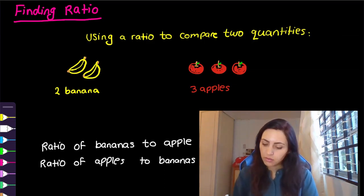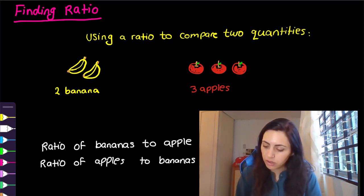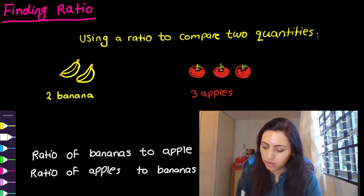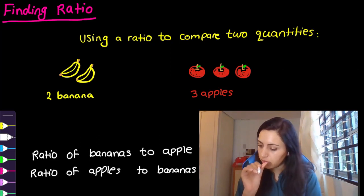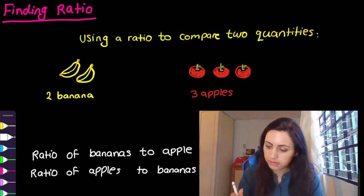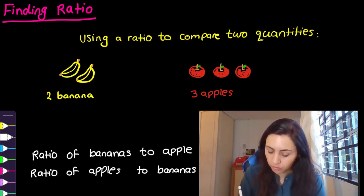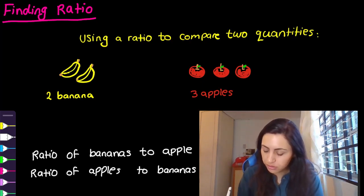In this chapter we'll be talking about ratio and using a ratio to compare two quantities. As you can see in my drawing, I drew two bananas and three apples. So we have two bananas and three apples.